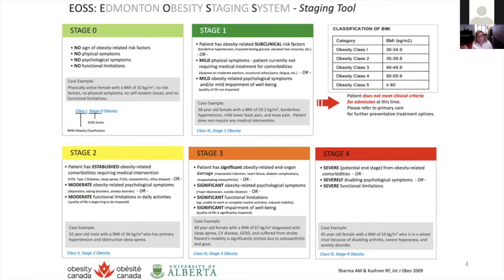The Edmonton Obesity Staging System classification is available in the supplemental materials of the CMAJ article on the guidelines, reproduced from Sharma and Kushner published in 2009. You can see the different staging and case examples in the gray boxes. Practically, in primary care where perhaps 40% of my patient panel are larger humans, this is a practical way to consider whether I should be encouraging follow-up. If a person is weight-stable at EOS zero or one, the emphasis is on weight stability and checking in. But if their weight is skyrocketing or moving into higher stages, that's an appropriate time to intensify treatment.